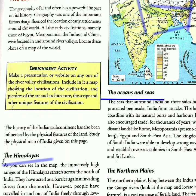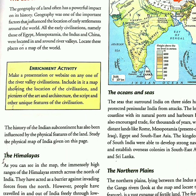The oceans and seas. India is called an Indian peninsula because India is surrounded by the Indian Ocean on three sides — the Arabian Sea on the west, the Indian Ocean on the south, and the Bay of Bengal on the east. The long coastline with its natural ports and harbours has encouraged trade in India for thousands of years with distant lands. Coastline, also known as seashore or coast, is the area where land meets the sea or ocean.